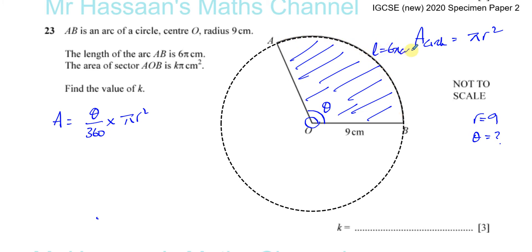An arc is a fraction of the whole circumference, and the circumference of the circle is given by 2πr. So the length of the arc is equal to θ/360 times 2πr.